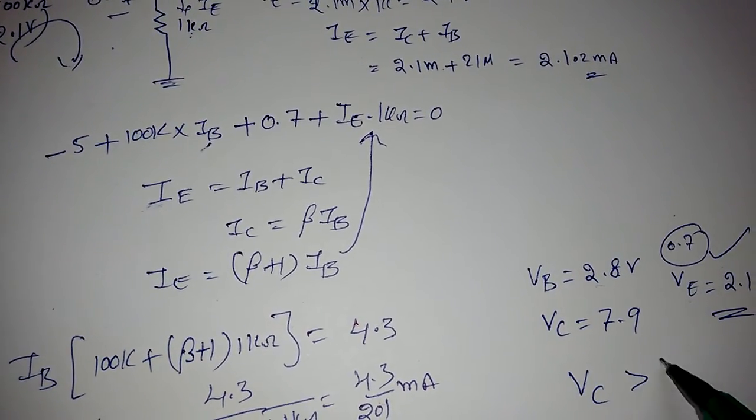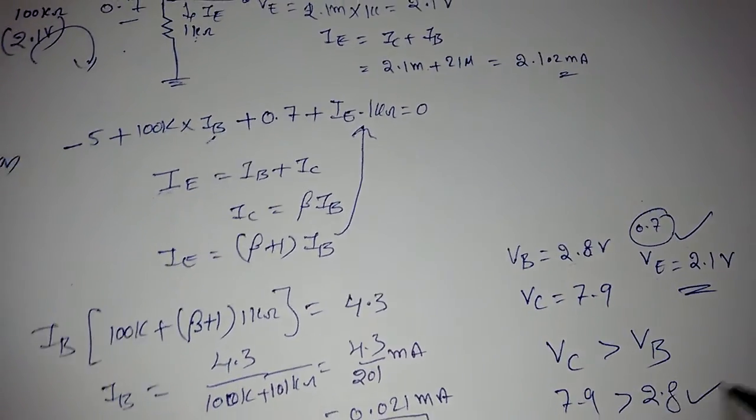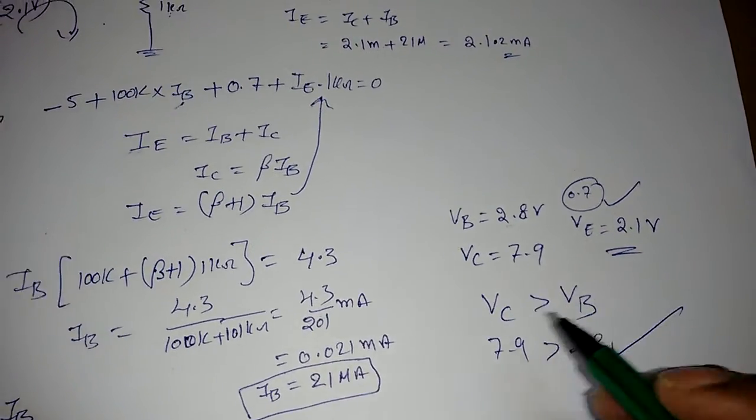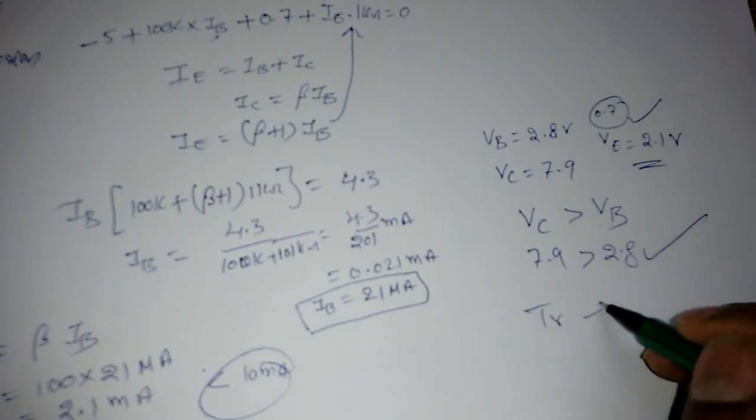VC should be greater than VB: it is 7.9 and VB is 2.8. So emitter-base junction is forward bias, collector-base junction is reverse bias, meaning the transistor is in active mode. Our assumptions are correct.